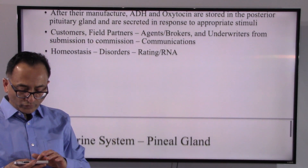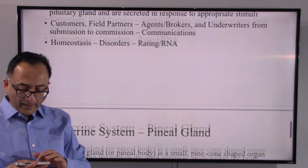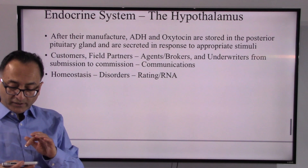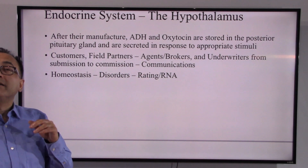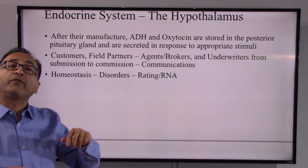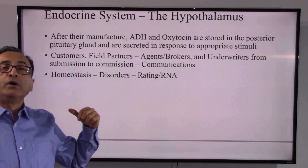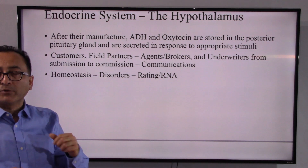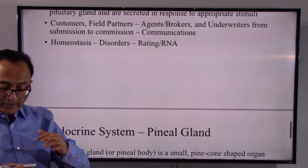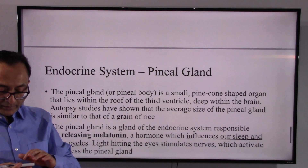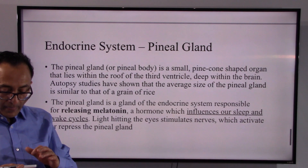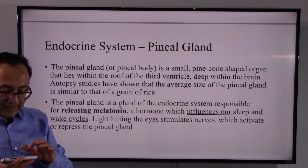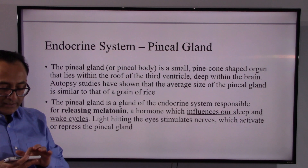When there is disorder or disease, you may see outcomes other than standard — such as being rated, postponed, or declined. I will get into the disorders and diseases as they relate to the pituitary gland and hypothalamus in the following video.